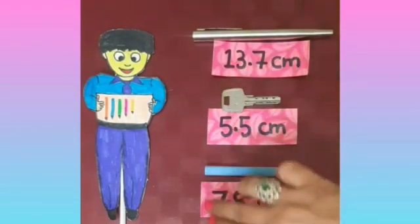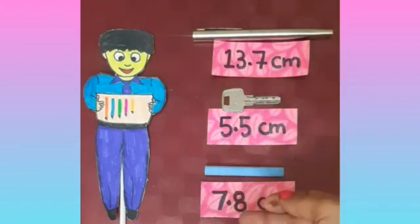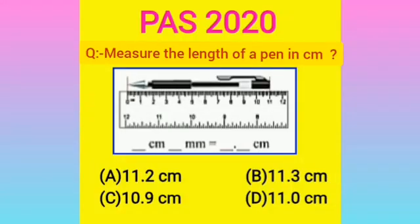So students, we have used a scale to measure the length of small things. For the preparation of the Punjab Achievement Survey, today's question is: measure the length of a pen in cm. The four options are: A) 11.2 cm, B) 11.3 cm, C) 10.9 cm, and D) 11.0 cm. If you look at the scale very carefully, you can see the length of the pen is 11 cm and 0 mm. So our answer is 11.0 cm — Option D.